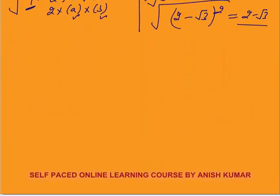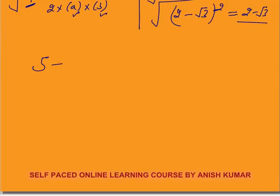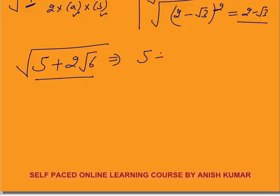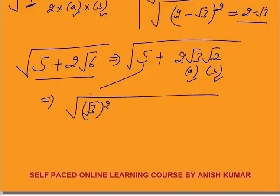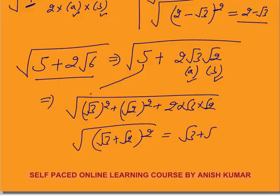Next example: find the square root of 5 plus 2 root 6. The number inside is again in the form of a plus b whole square. I write the surd as 2 times root 3 times root 2, so 2ab means a equals root 3 and b equals root 2 — since root 6 equals root 3 times root 2. Then a squared is 3 and b squared is 2, giving 3 plus 2 equals 5. So 5 plus 2 root 6 equals root 3 squared plus root 2 squared plus 2 times root 3 times root 2, which is root 3 plus root 2 whole square. The square root is root 3 plus root 2.